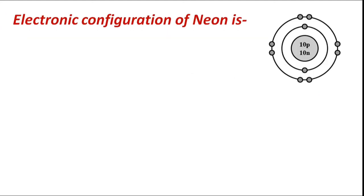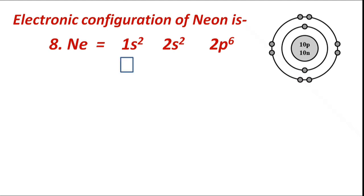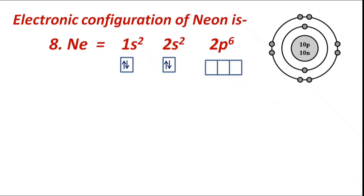Next example: the electronic configuration of neon according to the Aufbau principle is 1s2 2s2 2p6. According to Hund's rule, first electrons fill the 1s sub-level singly, then pairing occurs with electrons of opposite spin. By the same way, the next electron fills 2s singly, then pairing occurs by opposite spin. Electrons then fill the atomic orbitals of the 2p sub-level singly, and then pairing occurs with electrons of opposite spin.